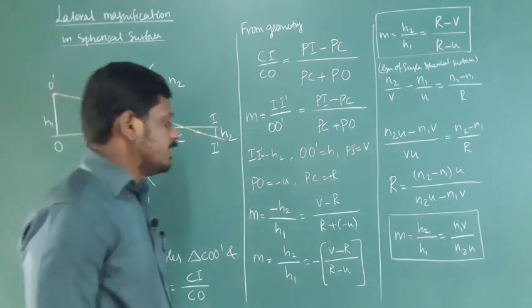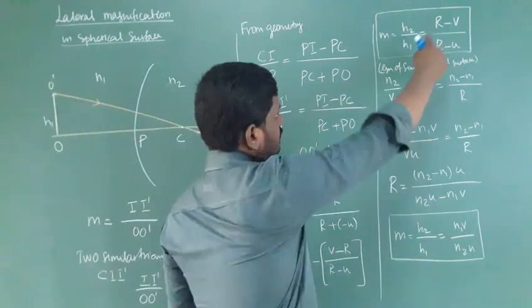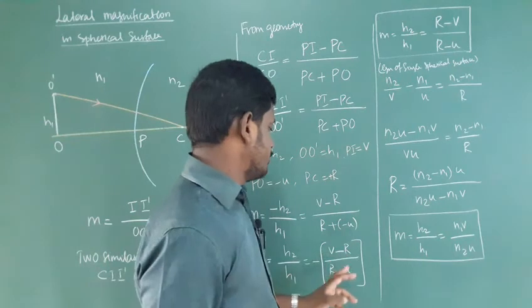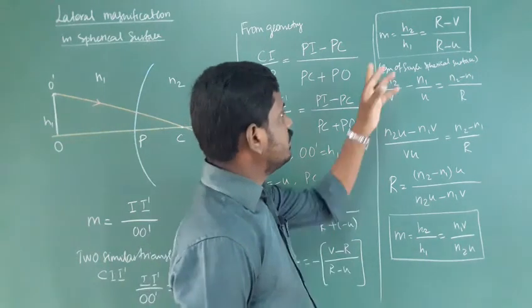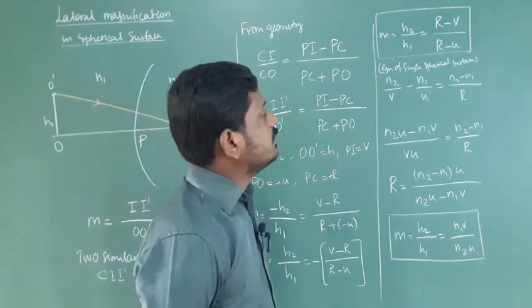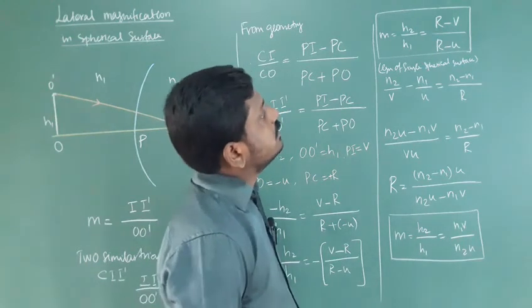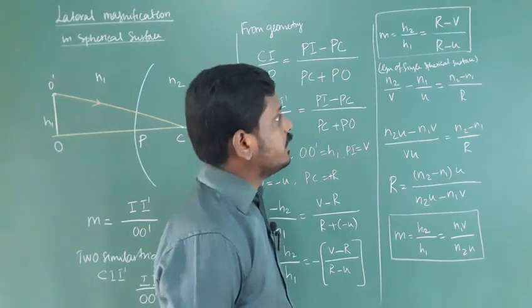Equals minus of V minus R by R minus U. Multiply by minus: R minus V by R minus U. This is the equation: magnification M equals h₂ by h₁, equals R minus V by R minus U.